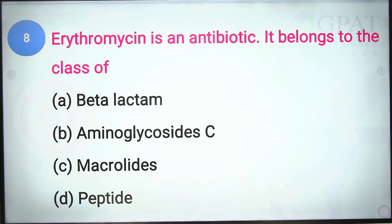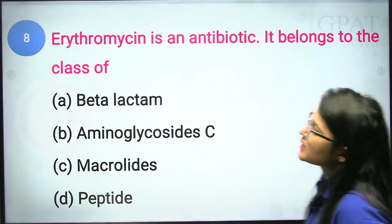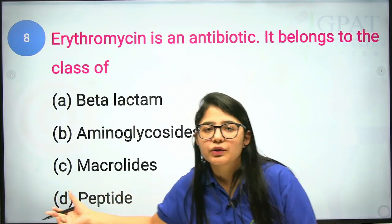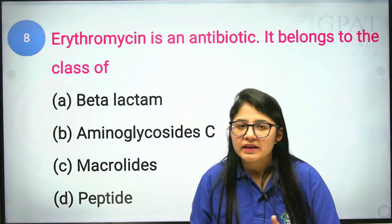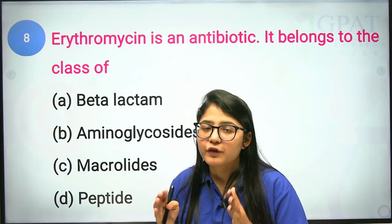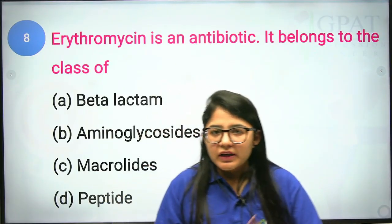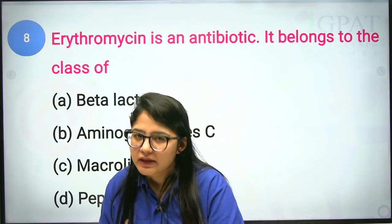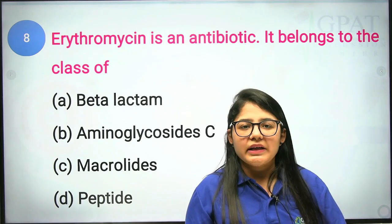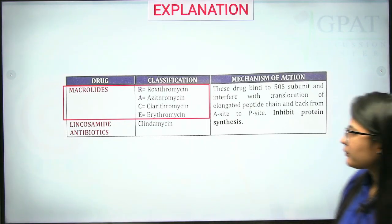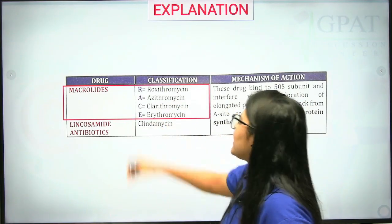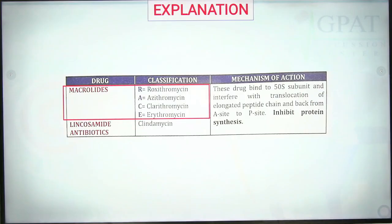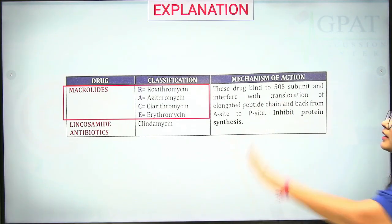The eighth question: erythromycin is an antibiotic that belongs to the class of macrolides. Remember the trick — RACE: Roxithromycin, Azithromycin, Clarithromycin, Erythromycin — every drug in this group belongs to macrolides. The mechanism of action is that these drugs bind to the 50S ribosomal subunit and inhibit protein synthesis. When protein synthesis is inhibited, bacteria lack their food source, lose energy, and die, clearing the infection.